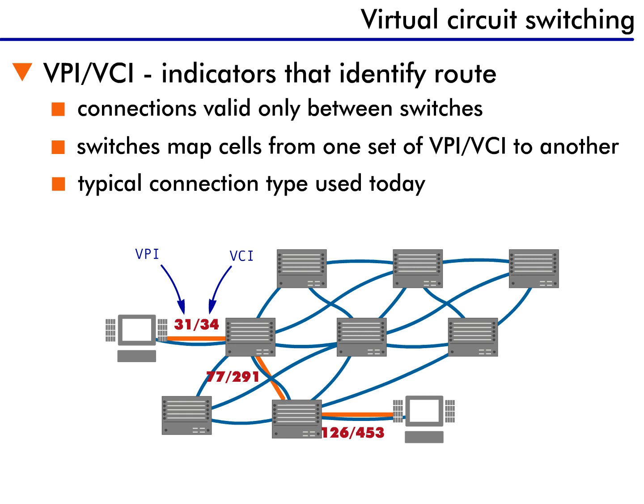This isn't so strange if you compare it to a cross-country trip in a car. As you go across the country, you travel on different highways. Similarly, as an ATM packet goes across the network, it uses different circuit identifiers.